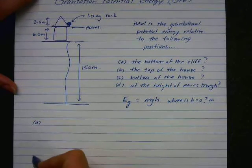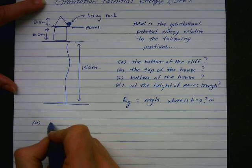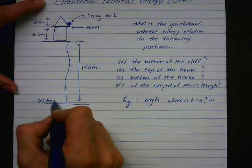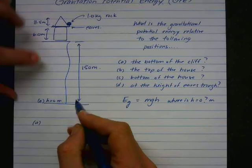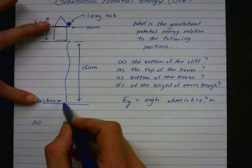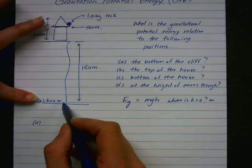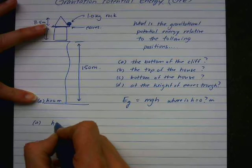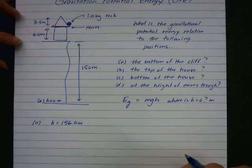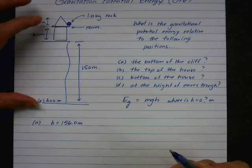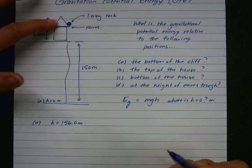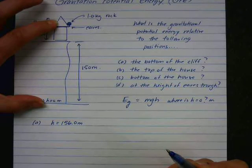For A, h equal to 0 is the bottom of the cliff. So that means in A, h is actually 150 meters plus 6 meters. Because it's the height relative to 0. And the rock is in the eaves. Height is equal to 0 is the very bottom of the cliff.